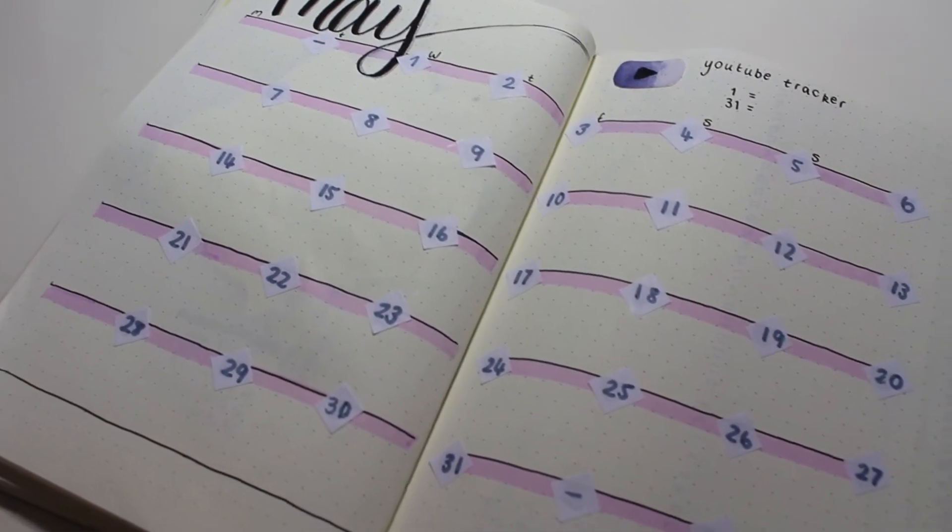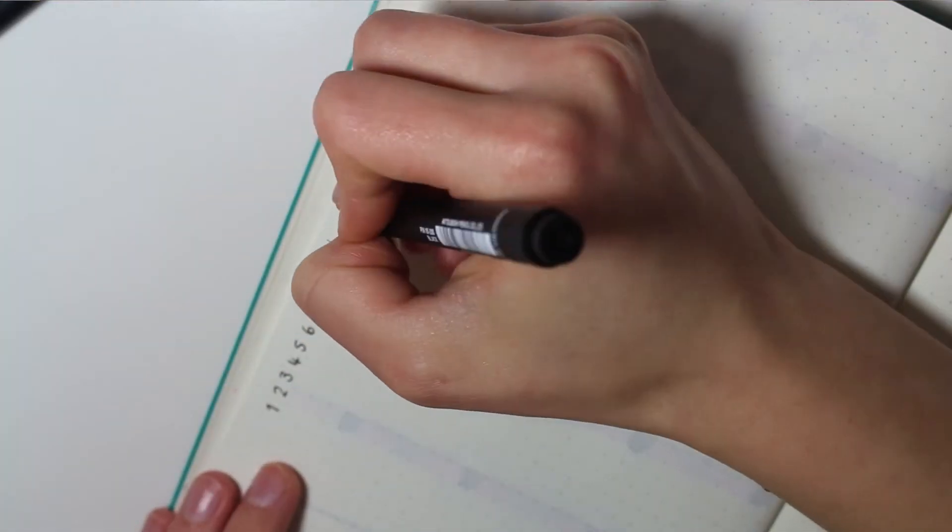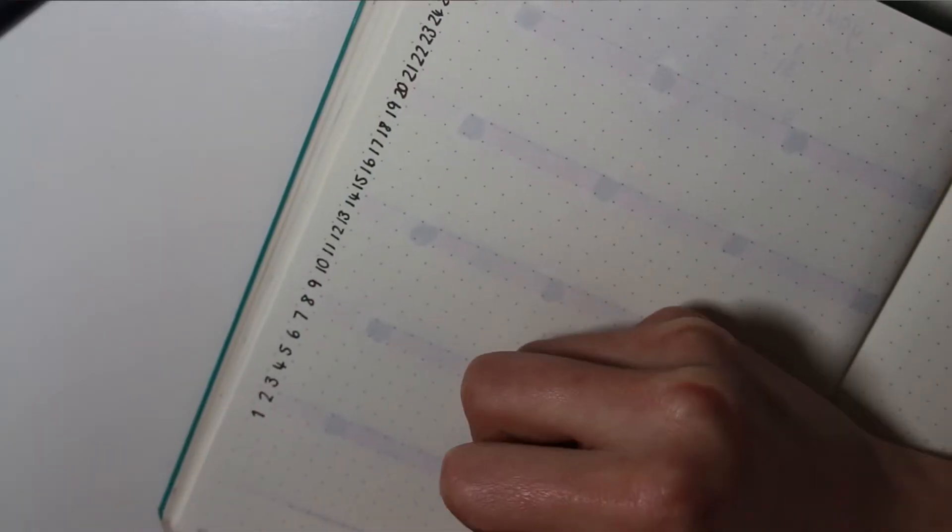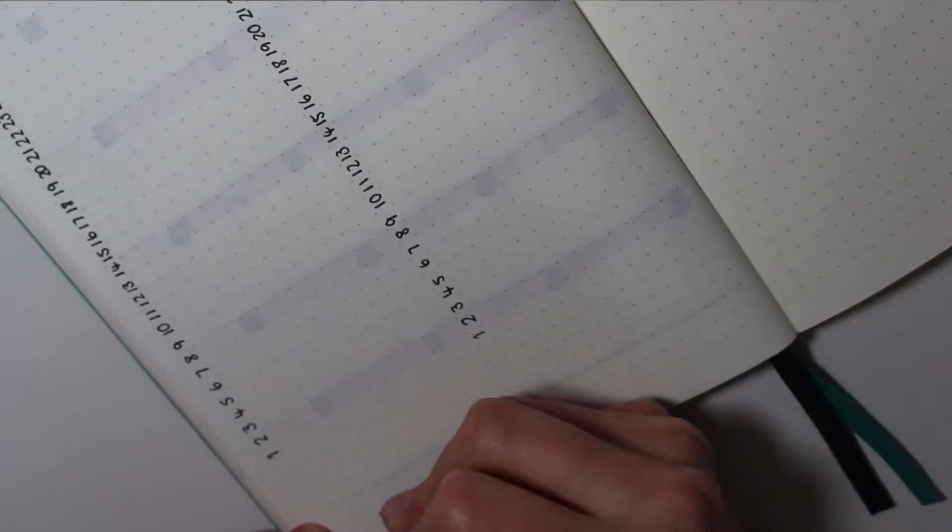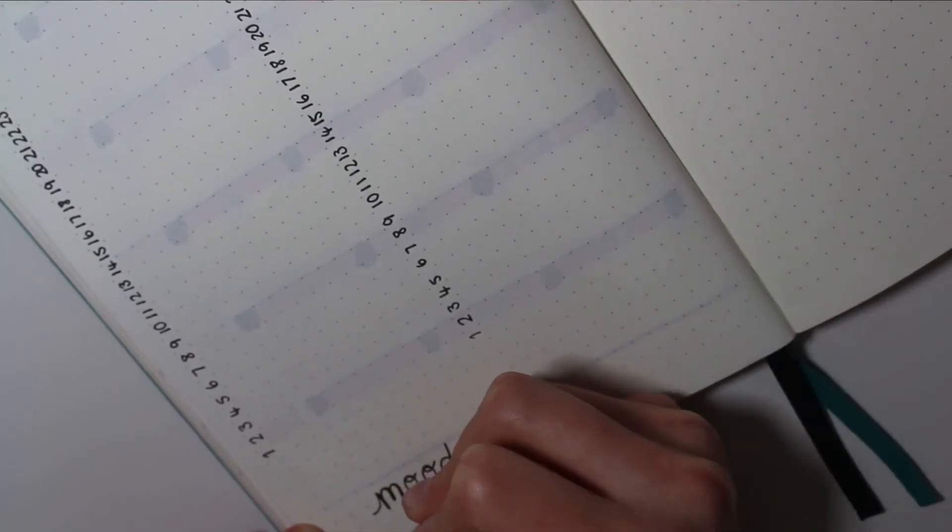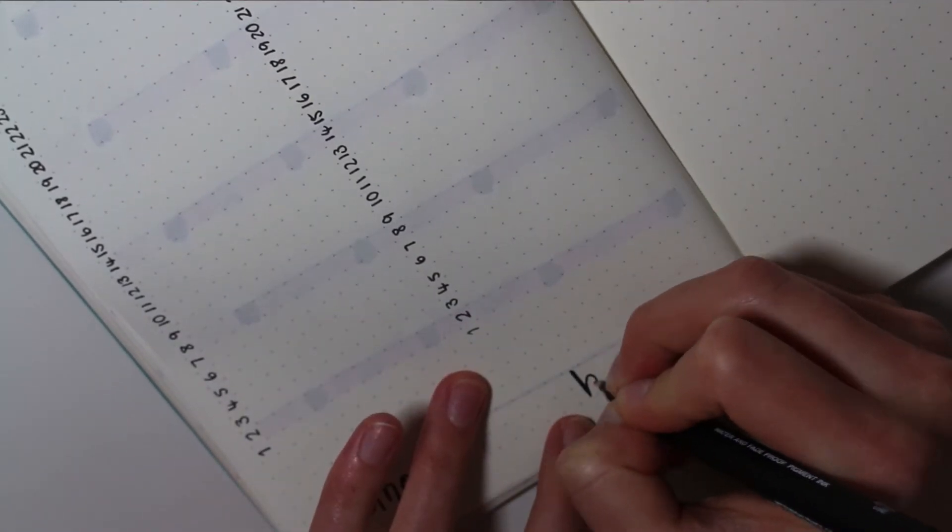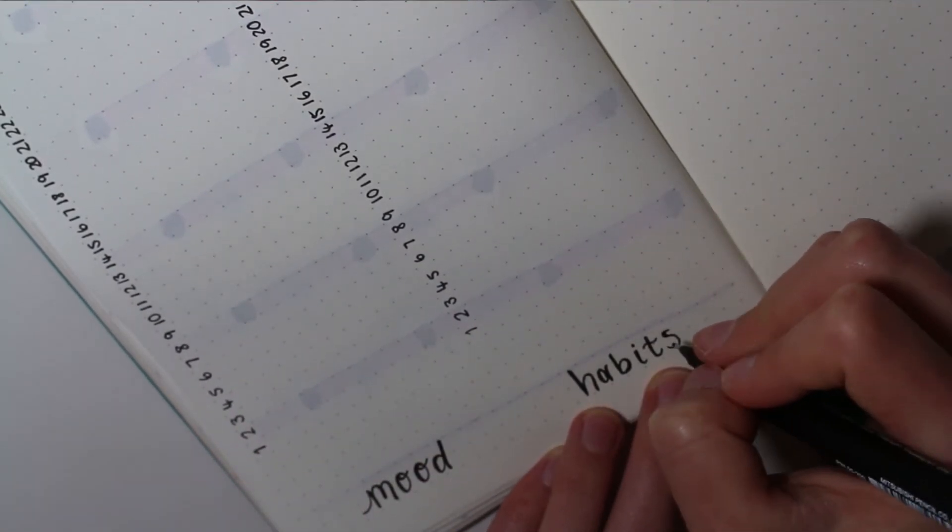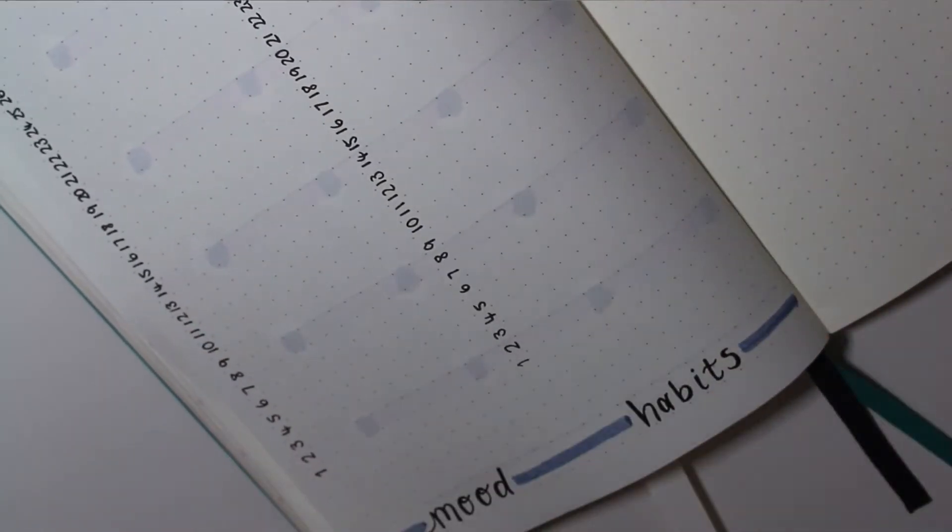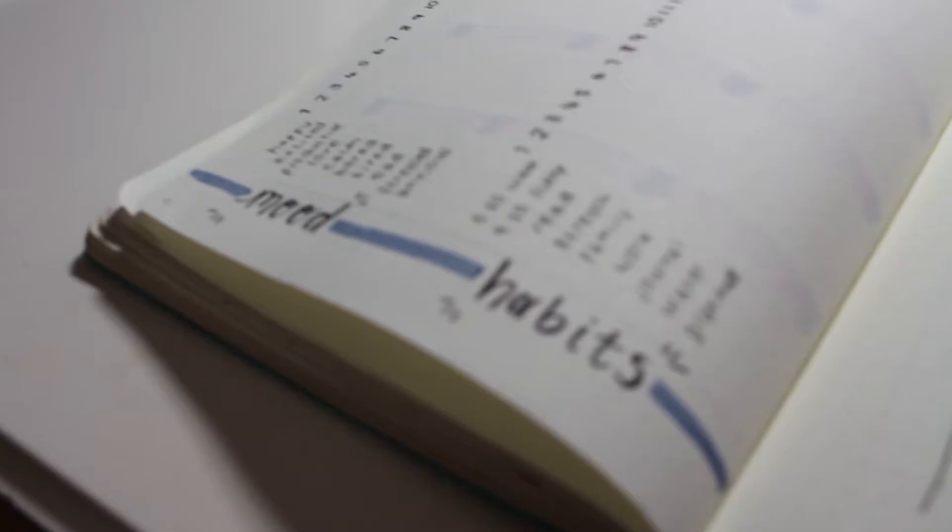I decided to put my habit tracker and my mood tracker on the same page. I did this in February and I really liked it, so I just decided to do it for May as well. I'm writing habits and moods at the bottom and then it's pretty simple really, just adding a little bit of detail and then I wrote down all of the different things I want to do and everything like that.